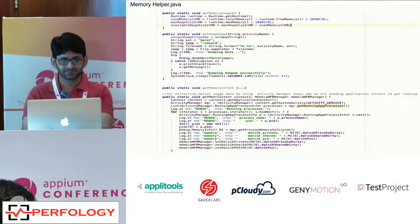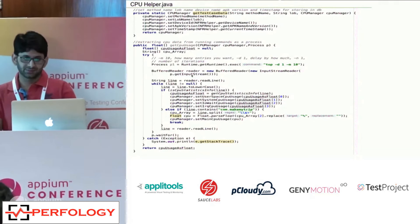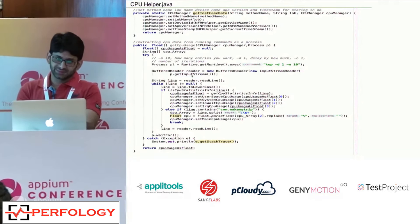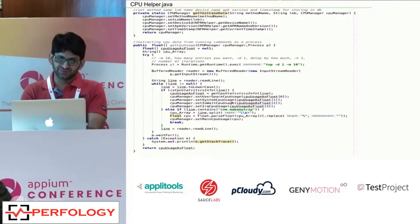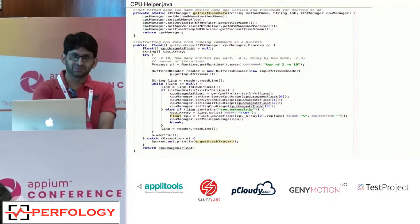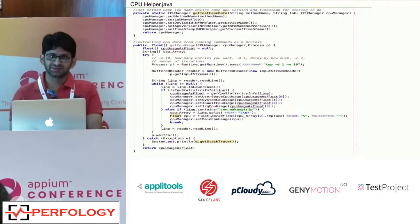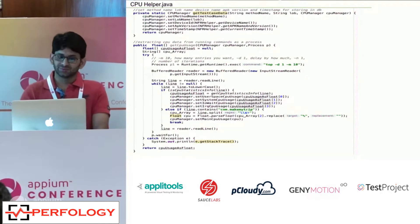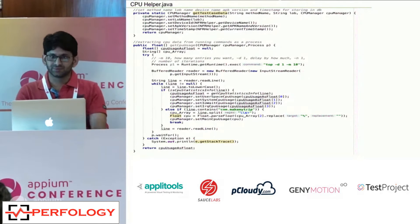For CPU, as discussed, we run the top command in a separate thread. We pass this process in a background thread that checks for a specific application — for com.makemytrip for example. If we have a different application, we pass a different package name, and it easily gets the CPU usage for that application. This thread runs in parallel, automatically invokes when we start a scenario, and continuously polls CPU consumption.